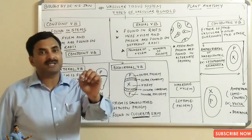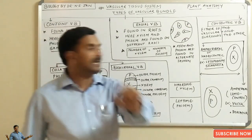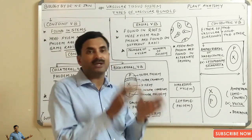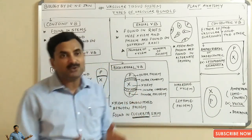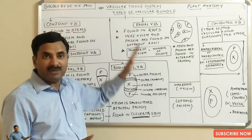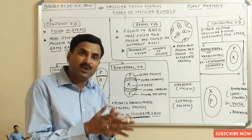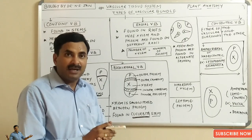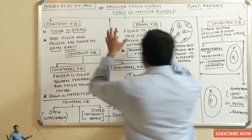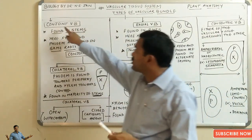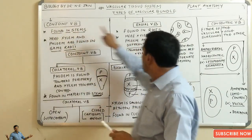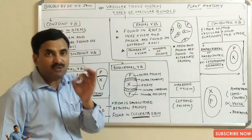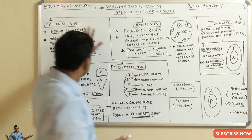Welcome students. We are going to discuss a topic of plant anatomy known as the vascular tissue system. In previous videos we discussed what a vascular bundle is, and in this video we are going to study the types of vascular bundles. Altogether there are three types: the conjoint vascular bundle, the radial vascular bundle, and the concentric vascular bundle.